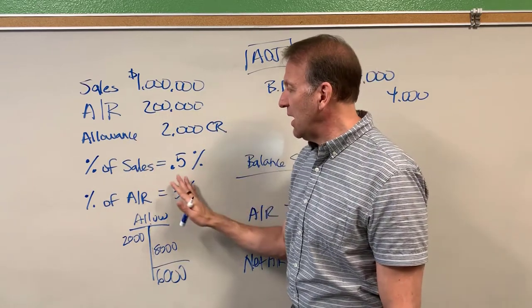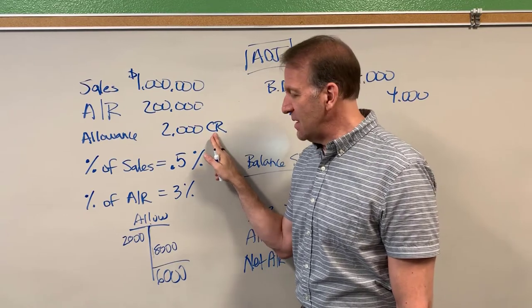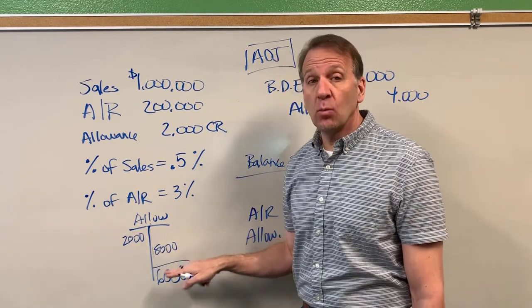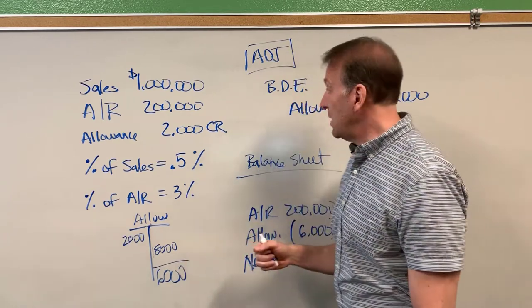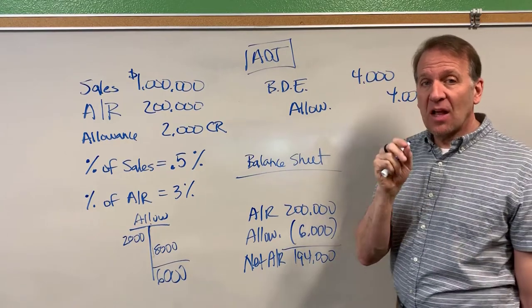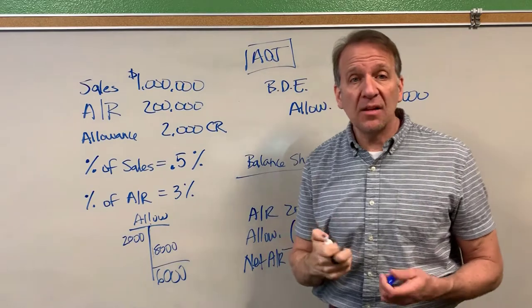So I'm using the same examples up here except I changed this to a debit. If this is a debit then my two thousand here would be a debit and my adjustment then would change. Instead of it being four thousand here, it would now be eight thousand. So I'm just telling you this because you need to be careful in any sort of homework problems or even test problems.